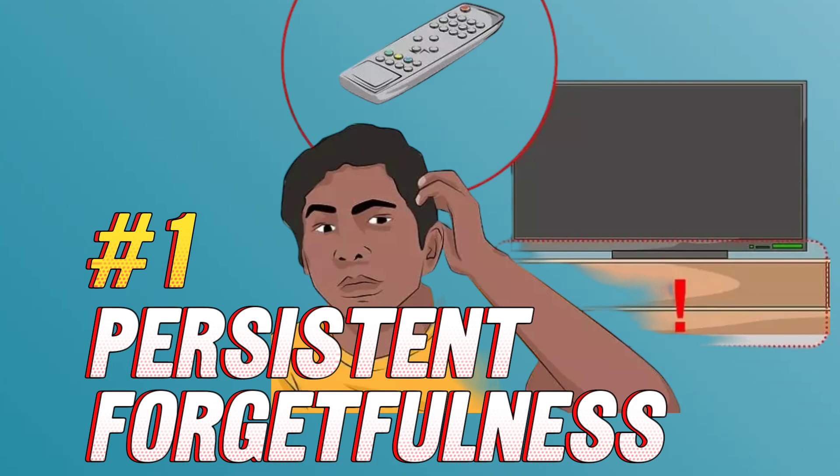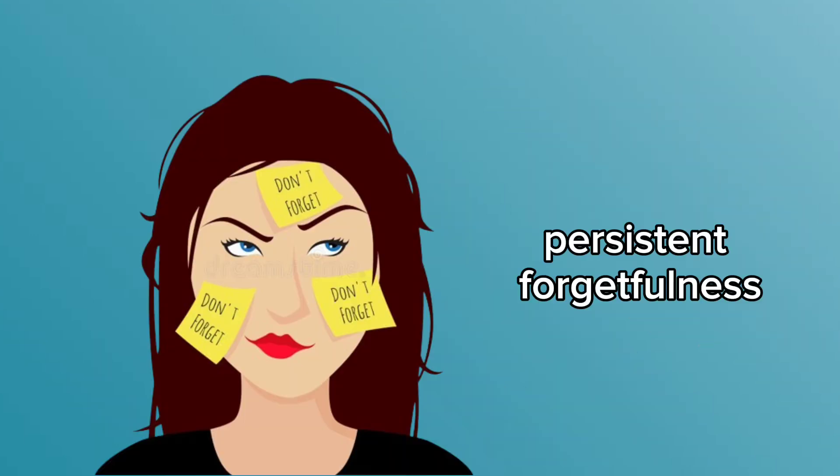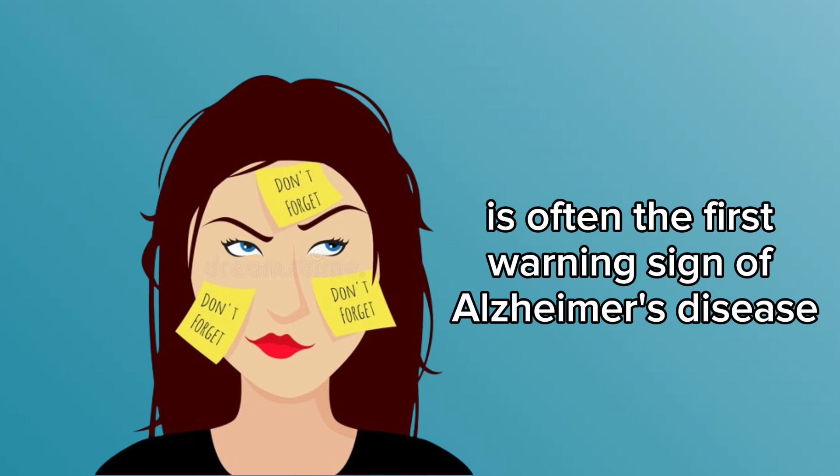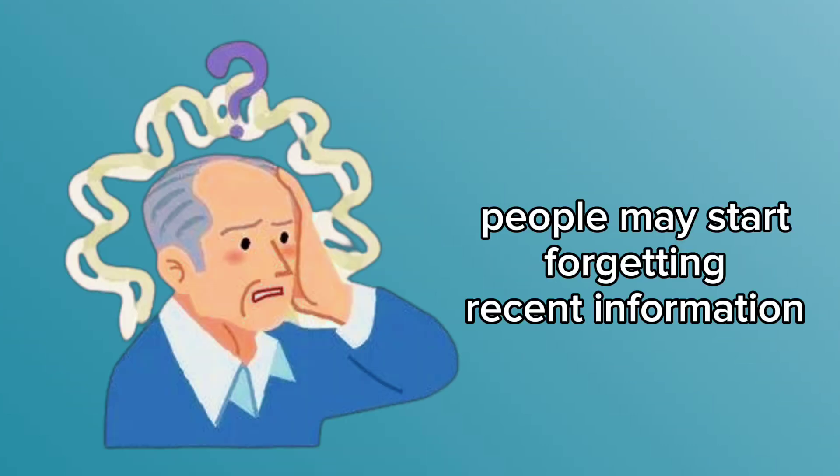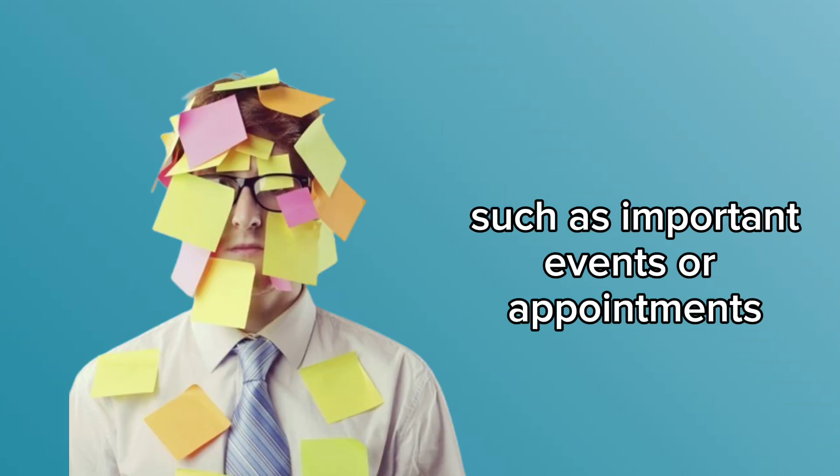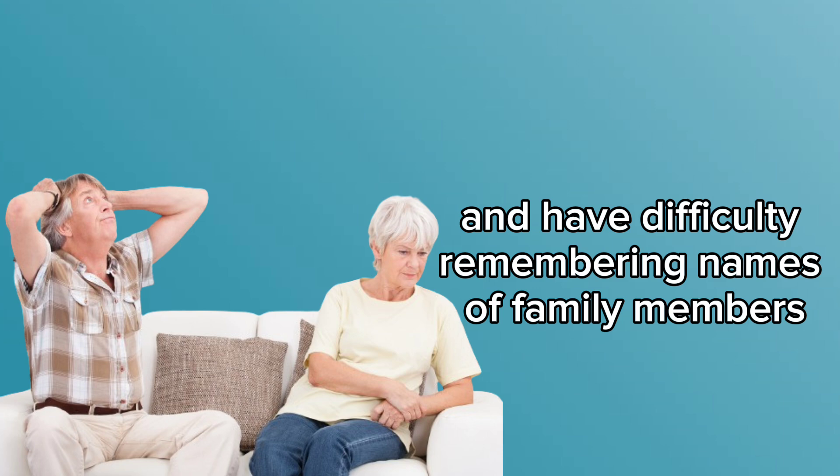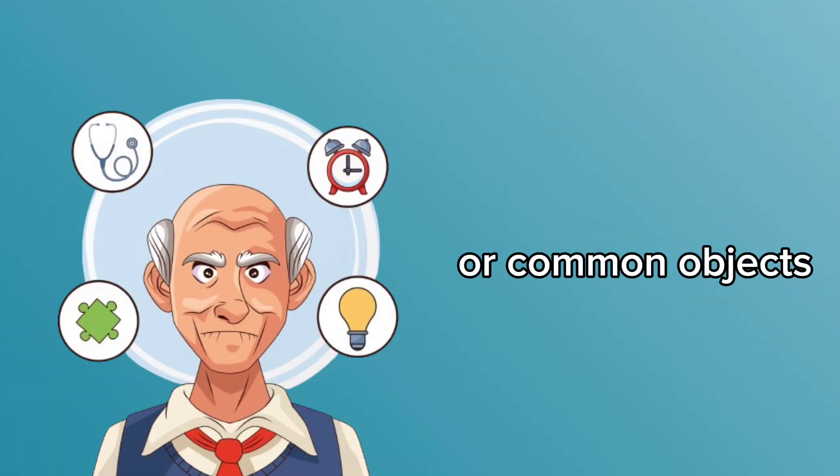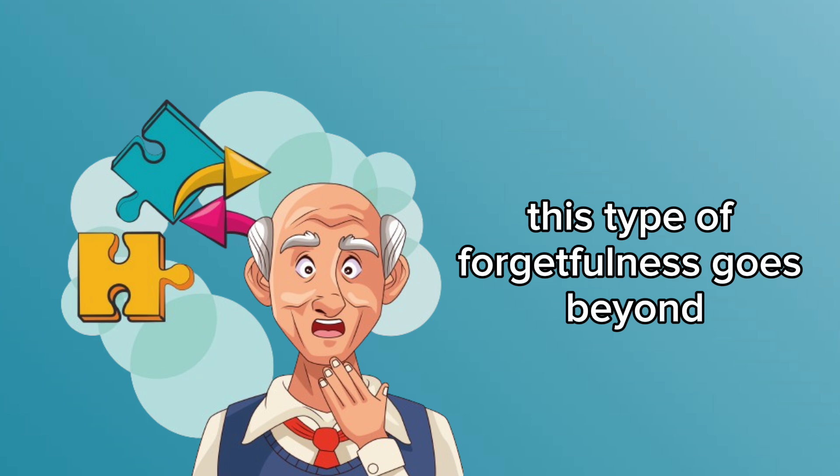Number one: persistent forgetfulness. Persistent forgetfulness is often the first warning sign of Alzheimer's disease. People may start forgetting recent information, such as important events or appointments, and have difficulty remembering names of family members or common objects.